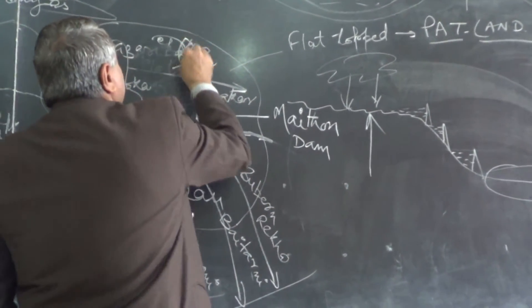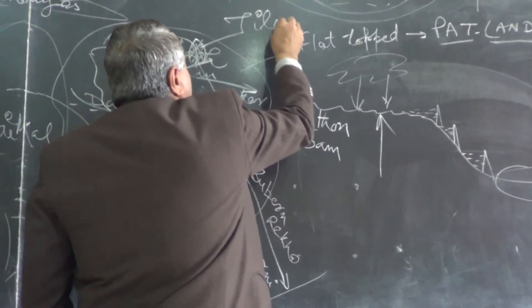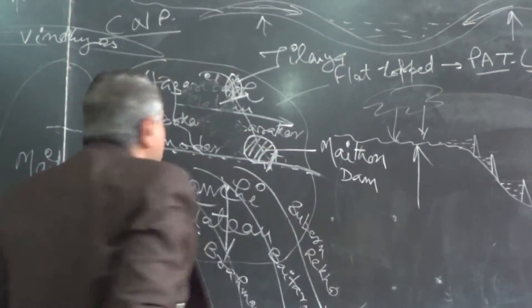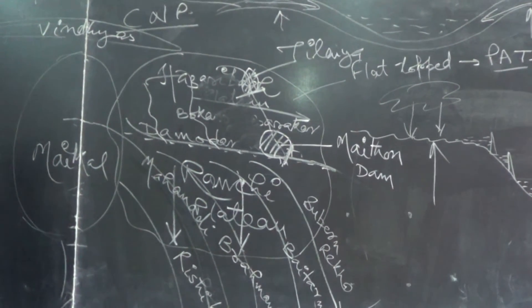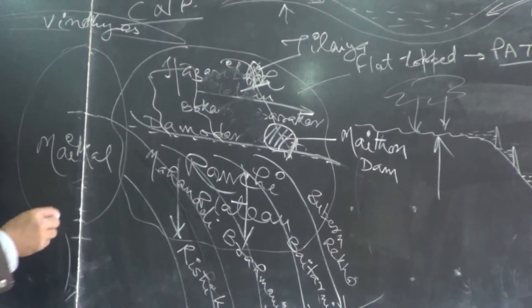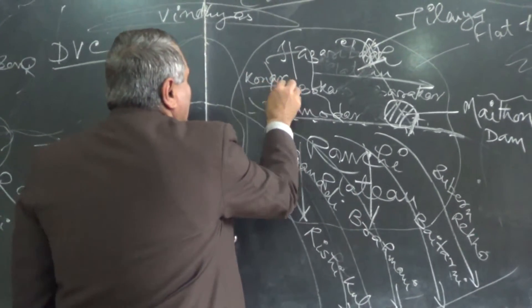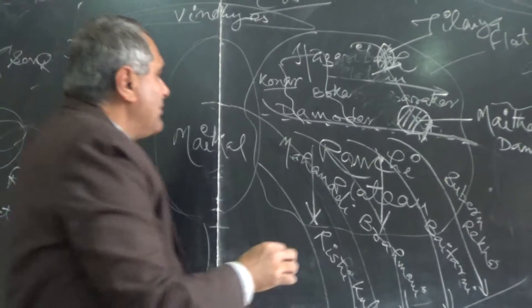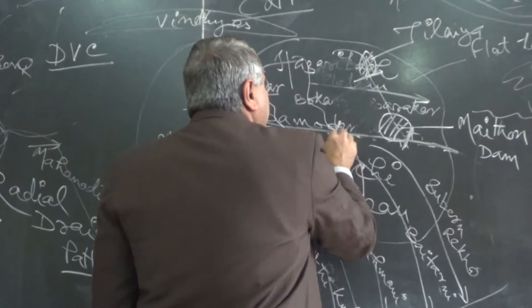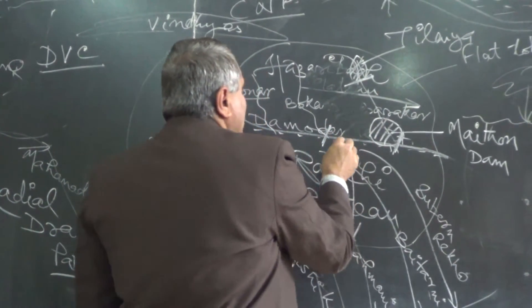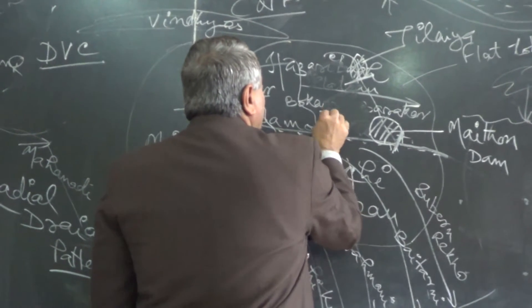Tilaiya Dam. You're talking about the third river? Yes, its name is Konar, Konar River. So we have constructed Tenughaar Dam, T-E-N-U, Tenughaar.